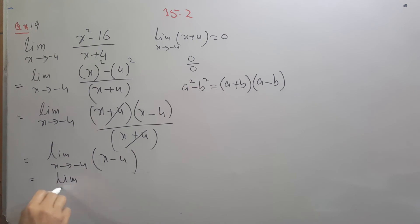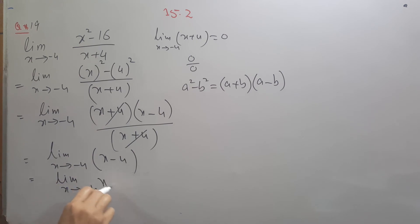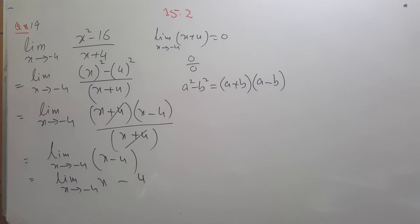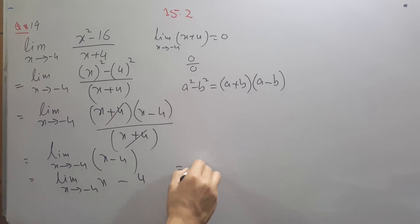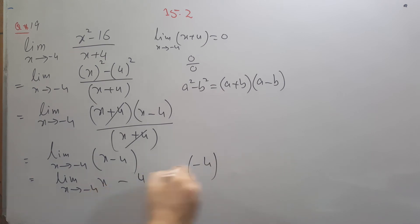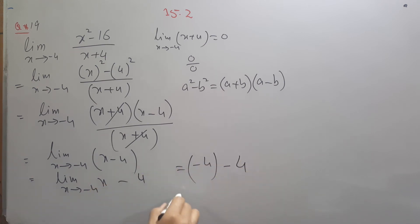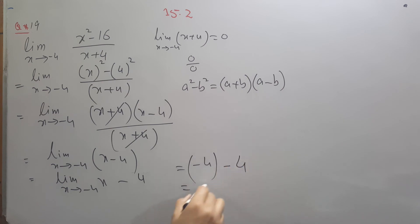Now applying the limit x equals minus 4 on (x minus 4): since 4 is a constant it stays as is, giving minus 4 minus 4 equals minus 8.